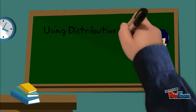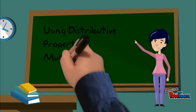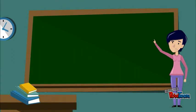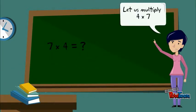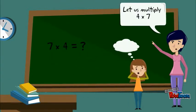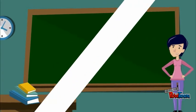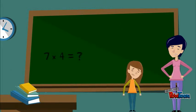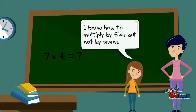Using Distributive Property in Multiplication. Let's multiply 4 times 7. I know how to multiply by 5's, but not by 7's.